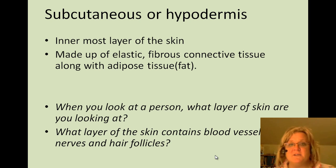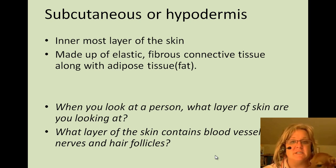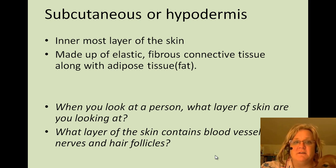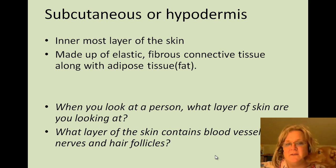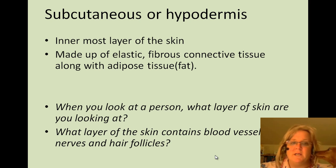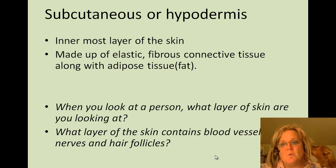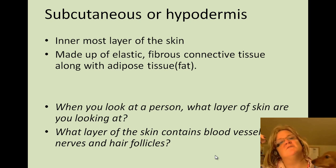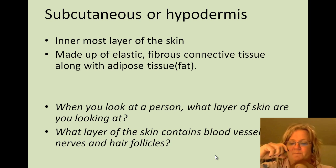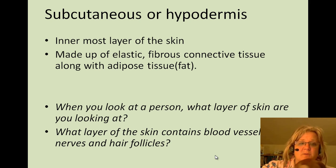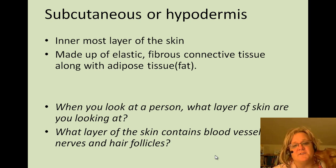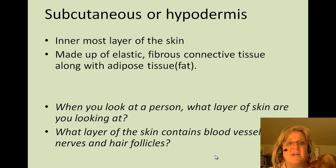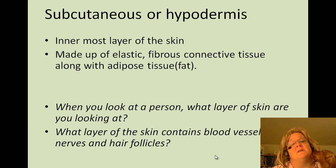The subcutaneous layer, or the hypodermis, is the innermost layer of the skin. It's made up of elastic, fibrous connective tissue along with adipose tissue — adipose means fat. So when you look at someone, the layer of skin you're seeing is the epidermis. And the layer that contains blood vessels, nerves, and hair follicles is the dermis.